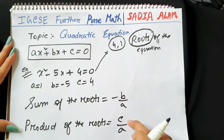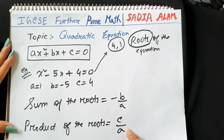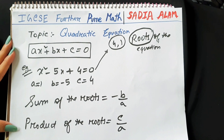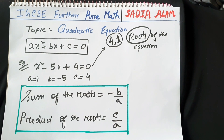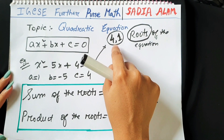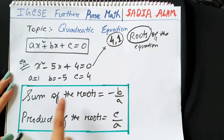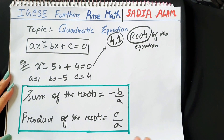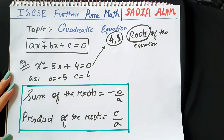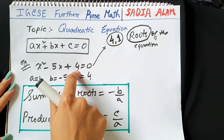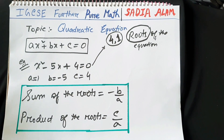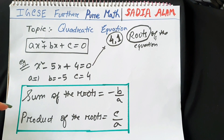Since we know the values of a, b, and c, by replacing them we can find the sum and the product of the roots. You may think: why do we need these formulas if we already know the values of x? We can just add them up. But there might be an equation where these terms are unknown — for example, p or k. In that case, we cannot solve by middle term to get the values of the roots, so that's when these formulas are helpful.